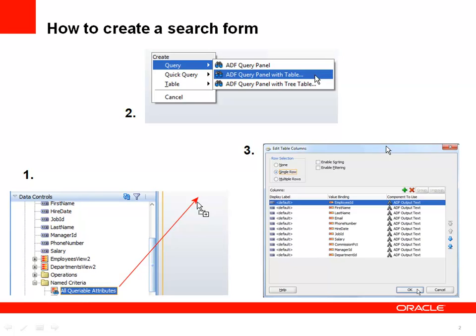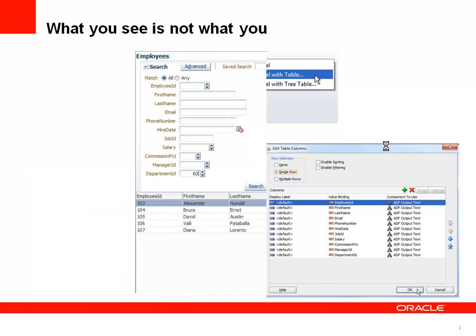To build an ADF search form, you drag the all queryable attributes criteria and drop it onto a Java surfaces page. From the open context menu, you choose the query option and then select how you want to have the search form built — just the form, or a form and a table to show the result set. If you choose a search form with a result set as a table, another dialog opens to allow you to further configure how the table should render, what options like sorting or filtering are provided, and the number and ordering of attributes displayed.